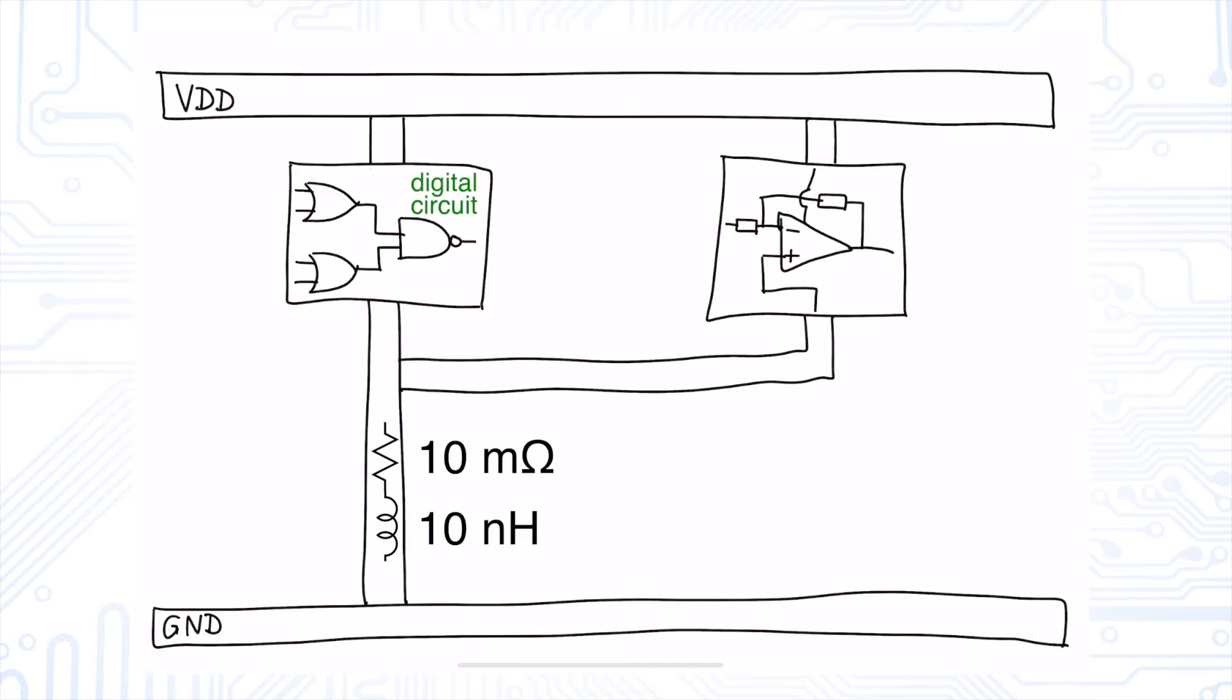Let's assume that the digital circuit performs fast switching operations. Let's say 10 milliamps flow for a very short time but in periodic intervals. This causes a peak voltage drop of 0.1 millivolt across our parasitic resistor. That is not a big deal.